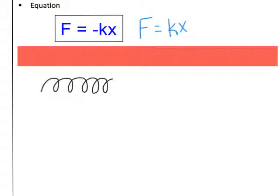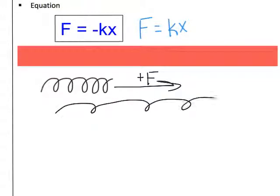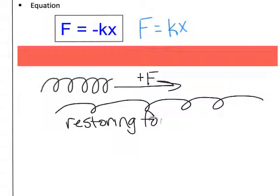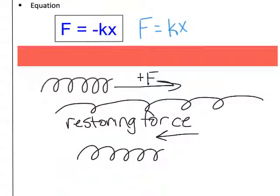If you're ever asked for the direction of a force, you can draw a picture or write out a direction. For example, if you apply a force to stretch the spring outward, that's your applied force. The restoring force pulls it back to its original shape — that's where the negative sign comes from. For our purposes we're only interested in the magnitude, so it's fine to ignore that negative sign.